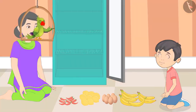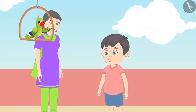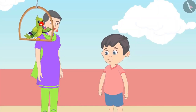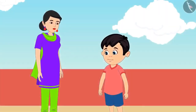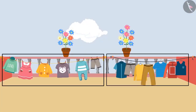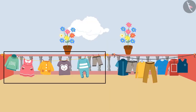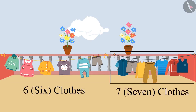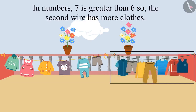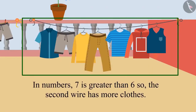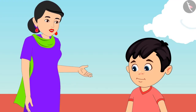Did you also count the items properly like Chotu? Now Chotu and his mother are going to bring dried clothes from the terrace. Chotu, which of these two wires has more clothes? There are 6 clothes on one wire and 7 on the other. Seven is more than six, so there are more clothes on the second wire. Very good, Chotu — absolutely right.